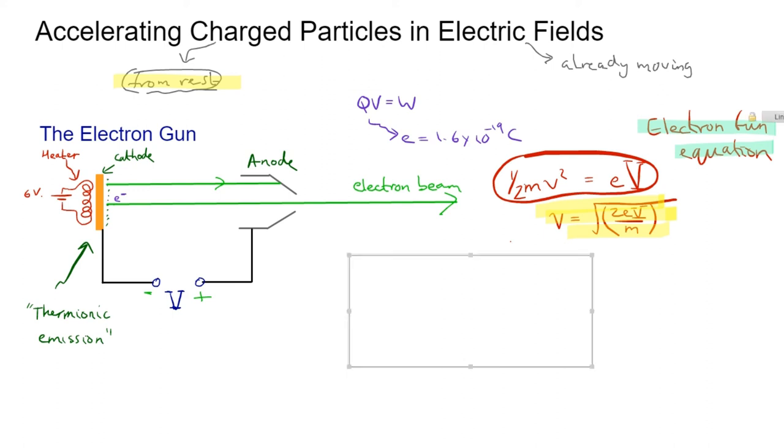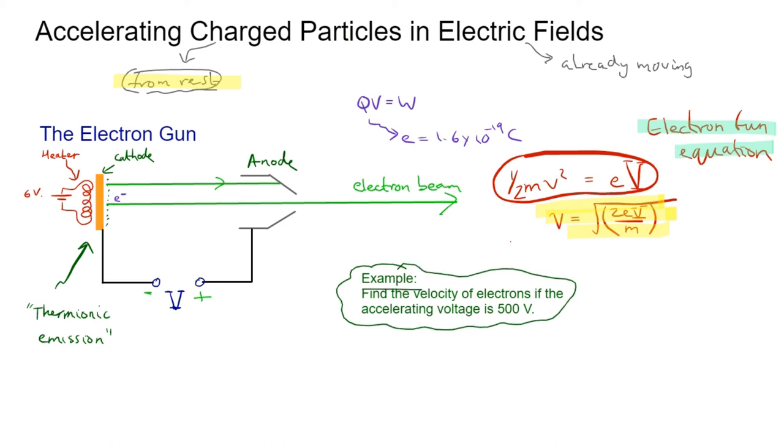Let's do a quick example. Find the velocity of electrons if the accelerating voltage is 500 volts. That's easy. We go v = √(2 × 1.6 × 10^-19 × 500 / 9.11 × 10^-31). The mass of an electron you can look up on the datasheet. Chuck all that in your calculator and it comes out as 1.3 × 10^7 metres per second. We've discovered how fast the electrons will be going just by knowing the accelerating voltage.